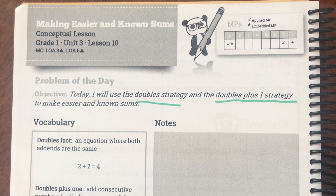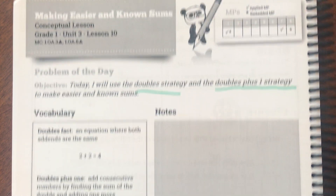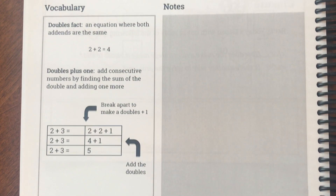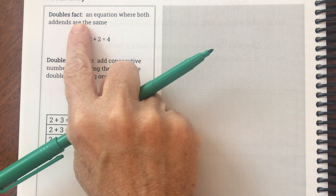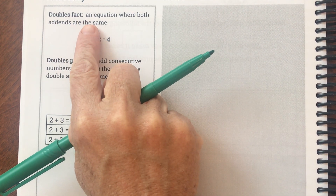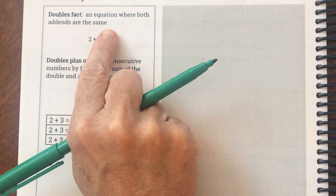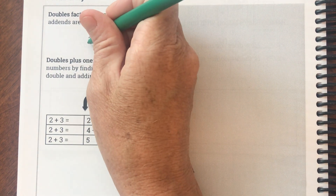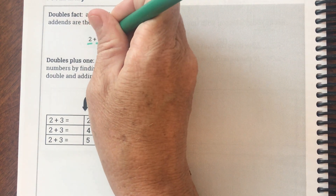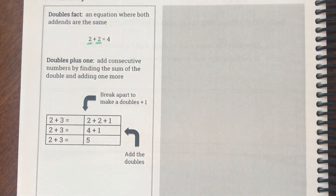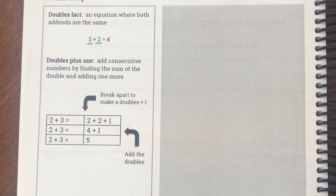Let's look at our vocabulary. It says 'doubles fact': an equation where both addends are the same. So here we have two and two. Doubles are things that you kind of need to learn — you need to know your doubles.